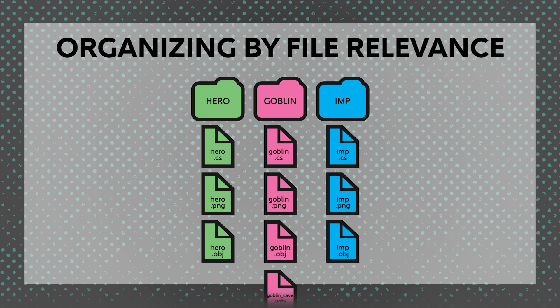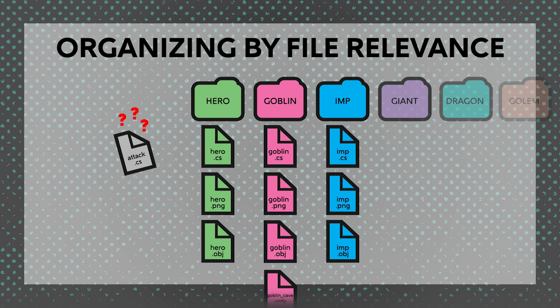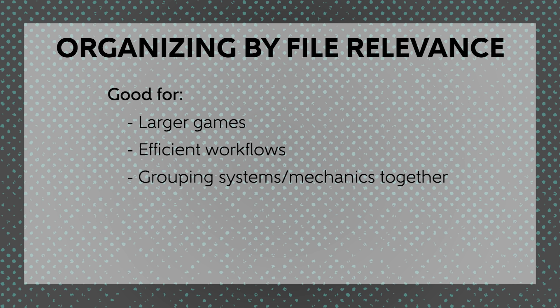Another option is organizing by file relevance. This is where you group things together by what they affect. For example, you might put your main menu scripts, prefabs, and textures all into one folder. This can create more gray areas for what folder a particular asset should belong to, and it will require more setup as you build out more sections of your game. But ultimately, this system is going to probably be better for bigger projects and is more workflow friendly. You're likely going to be working on one mechanic or section of your game at a time, and it helps to have all of the assets associated with that in one place.